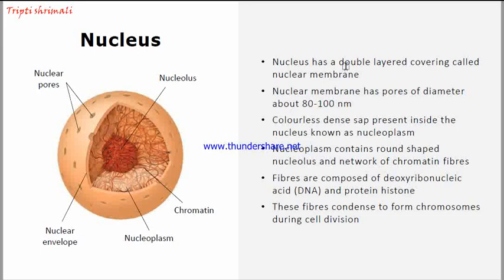The nucleus has a double-layered covering. There are two coverings present and these are called nuclear membranes — an outer and an inner nuclear membrane. These membranes have pores present on them, and the diameter of these pores is about 80 to 100 nanometers.